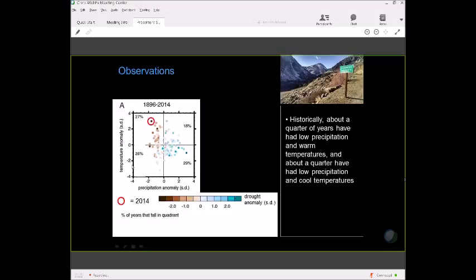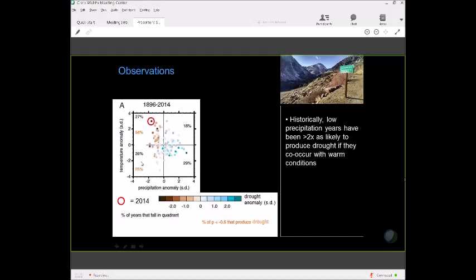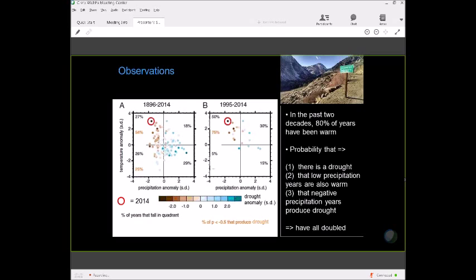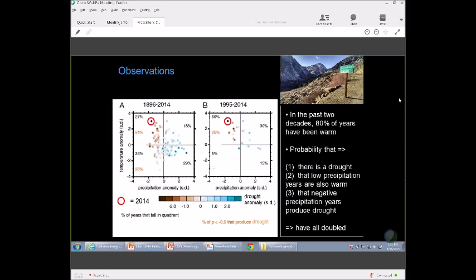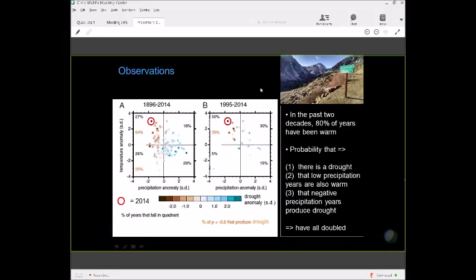What's been happening with that long-term warming in California is that over the last two decades, 80% of the years have been warm. What that means is we've got this temperature coin that is coming up tails sort of over and over. It's increasing the odds that when low precipitation happens that it's happening within a warm context. As a result, we're getting more drought. If we compare the last 20 years with the previous century, the fraction of years that are drought years has doubled. The fraction of low precipitation years that coincide with warm temperature has doubled. And the fraction of low precipitation years that produce drought has also doubled.